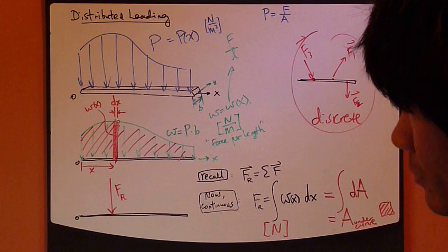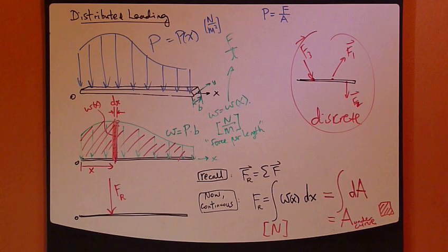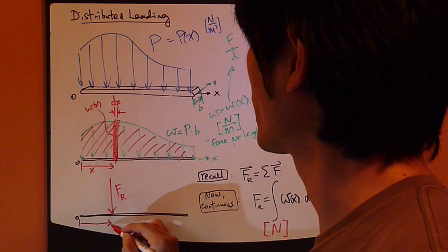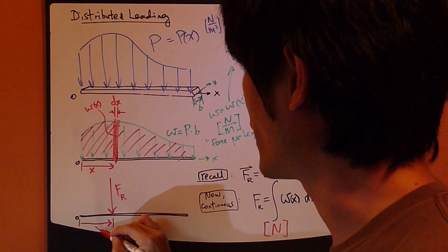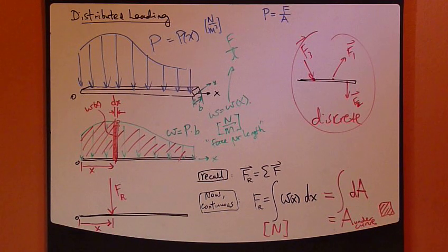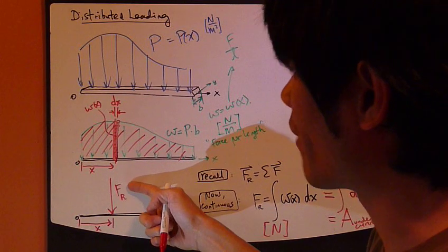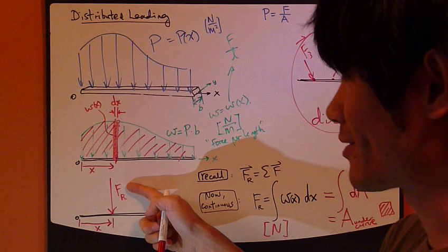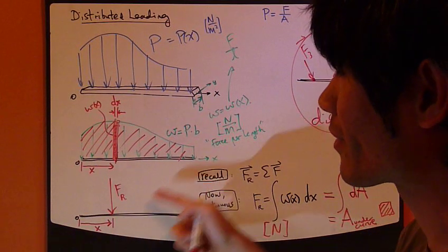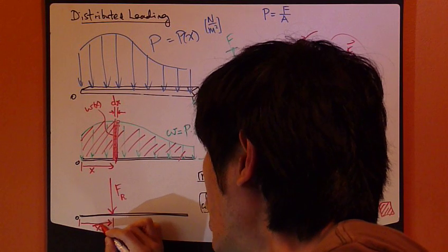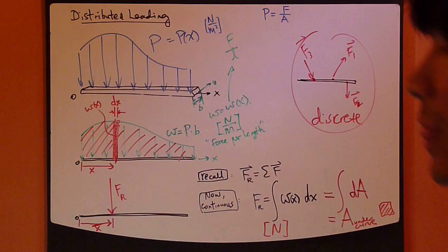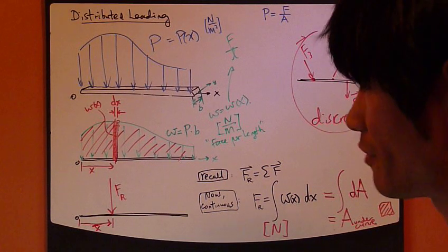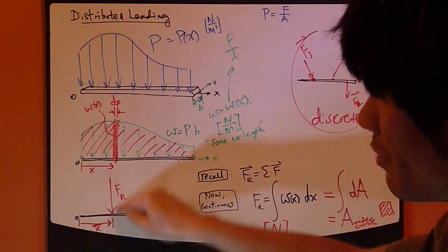Now, next question is, where is this force applied. Can we find the location of this force, F_R? What is this x right here? Instead of calling just x, since this F_R is kind of special as the single resultant force that represents this distributed loading, I'm going to call this x, x-bar. Pardon the dogs. So, x-bar is the next unknown we need to find. Where exactly is this F_R being applied?